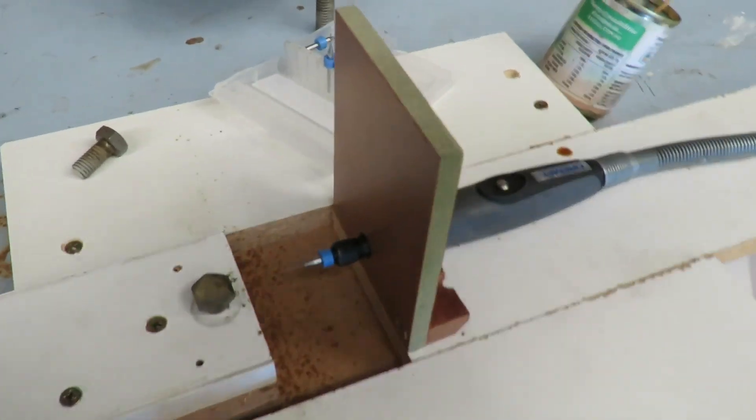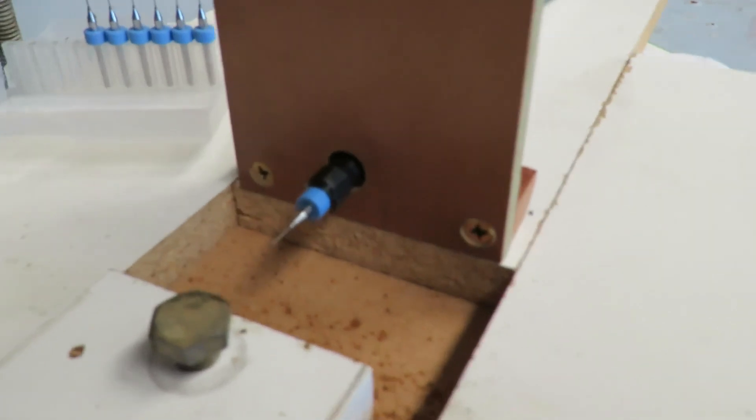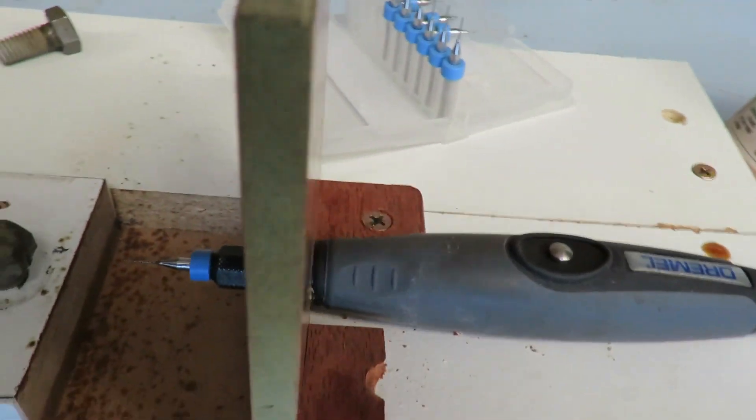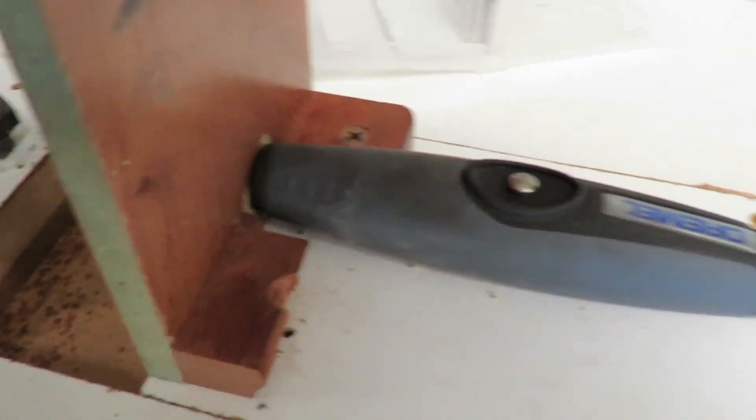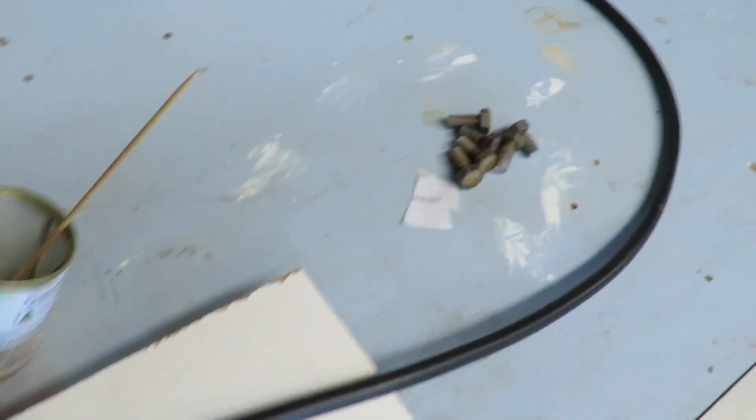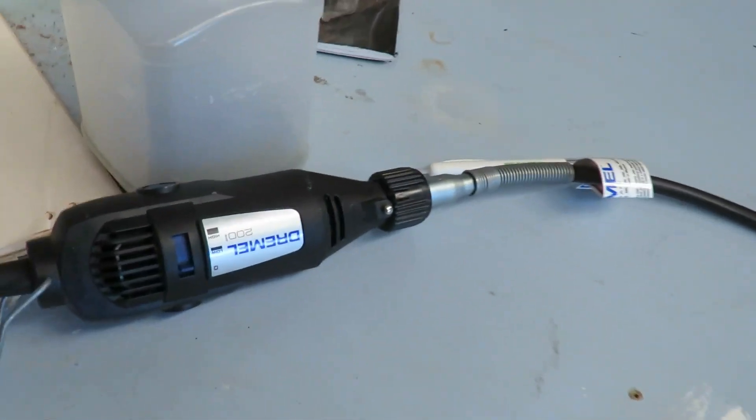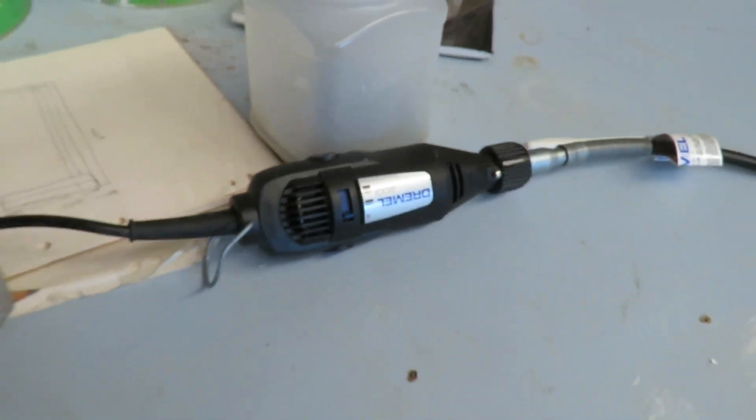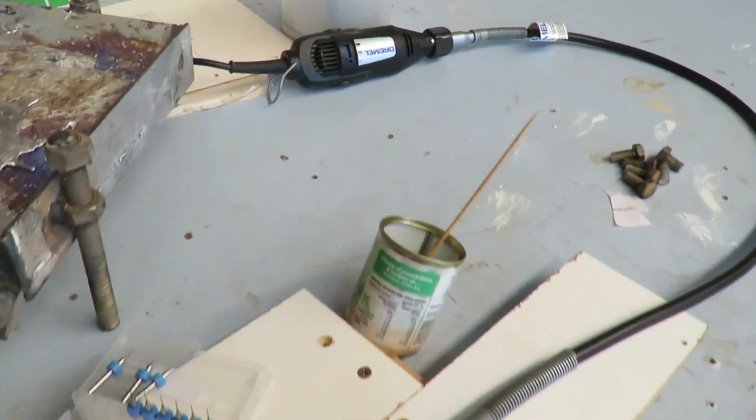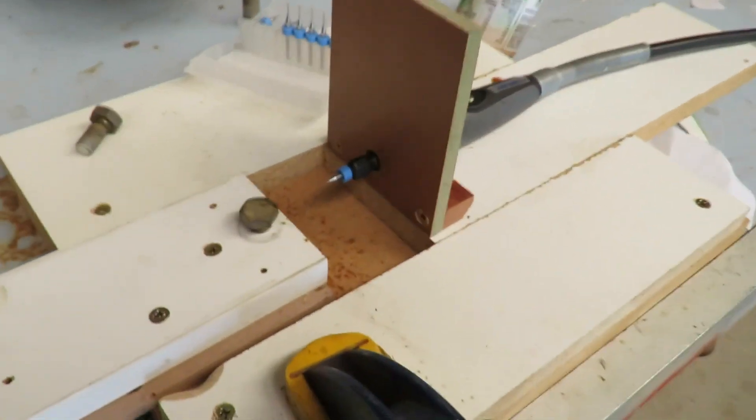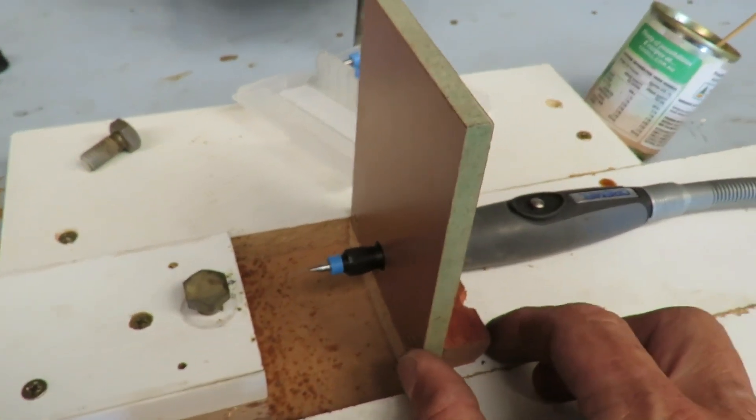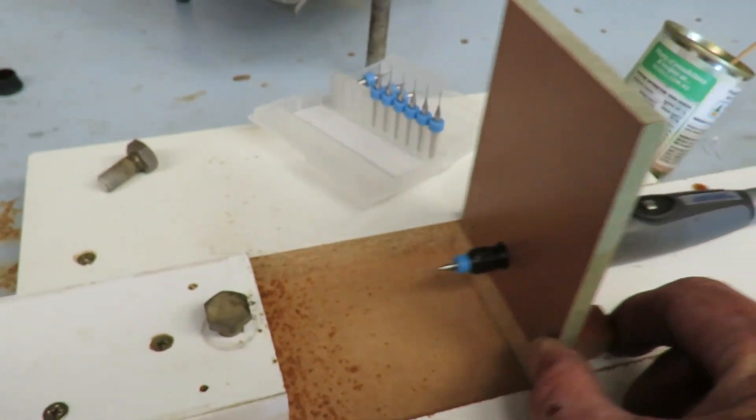I've got the handpiece from the Dremel to drill the hole and use the thread on the end of the handpiece to screw it in. You see the flexible cable. I have a two-speed Dremel and I'm using it on the slowest speed. I find the slow speed works better.